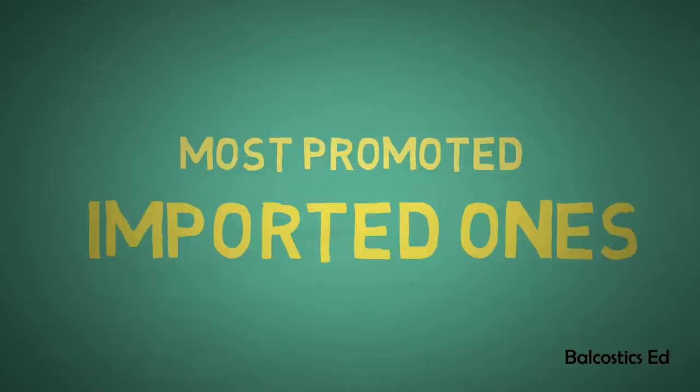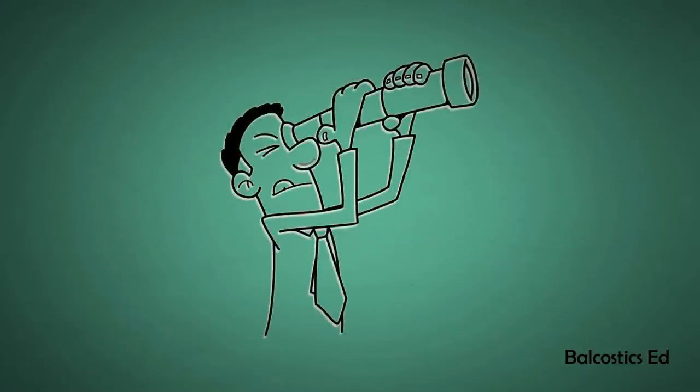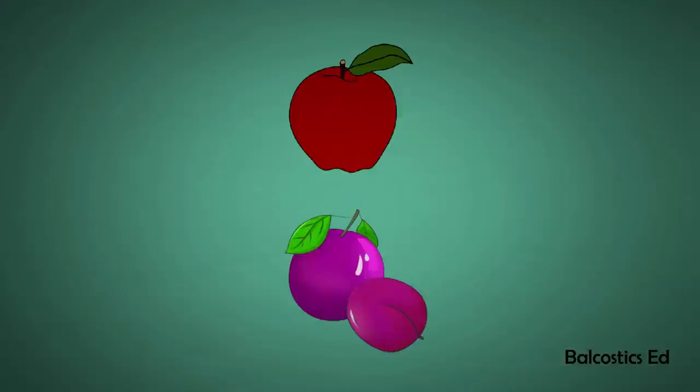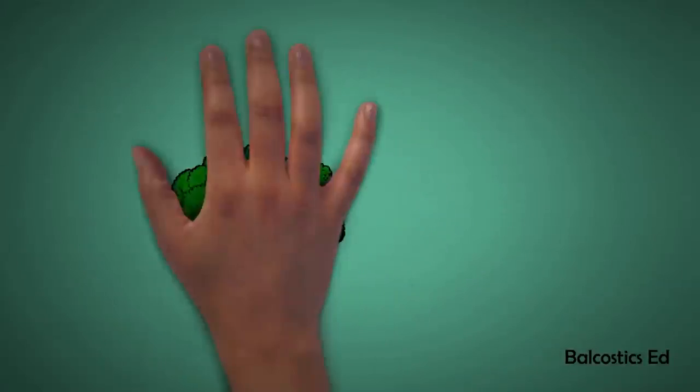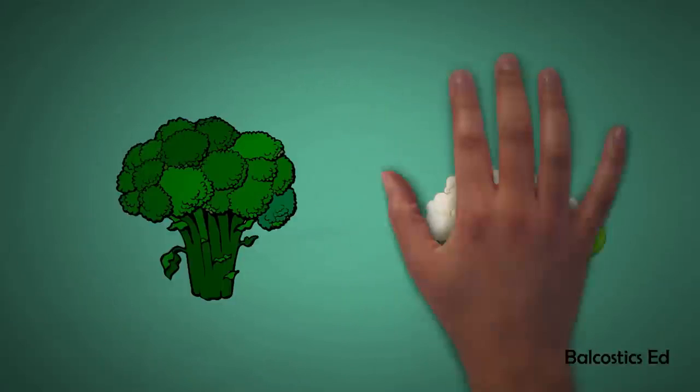We may therefore seek out whole grain cereals and breads, fruits such as the American apple, plum, and grapes, and vegetables such as broccoli and cauliflower. But how do our local foods compare?